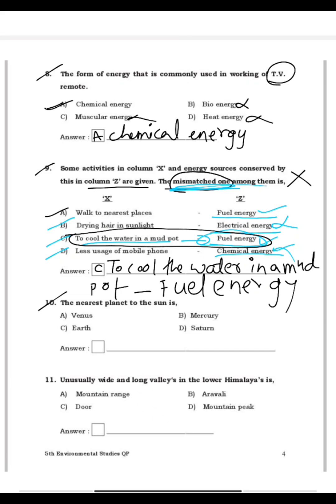Question 10: Which is the nearest planet to the sun? The answer is B — Mercury is the nearest planet to the sun.